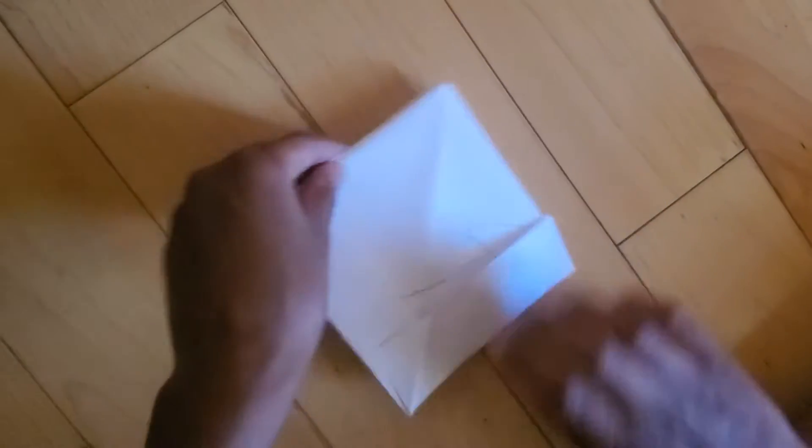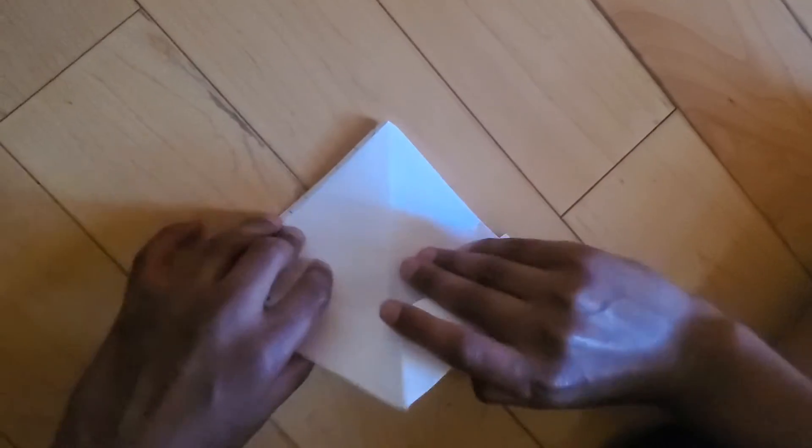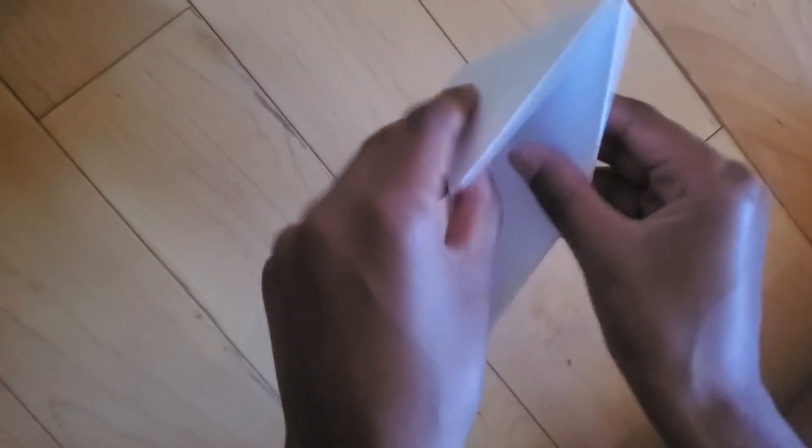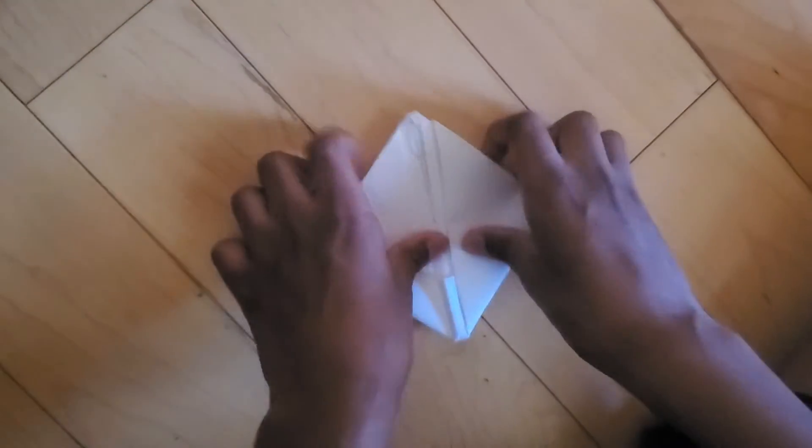Then you flip the paper over and there will be another V and then you pull that up. You'll see we have another smaller hat. You do the same thing we did with the bigger hat. And then just pull it open.